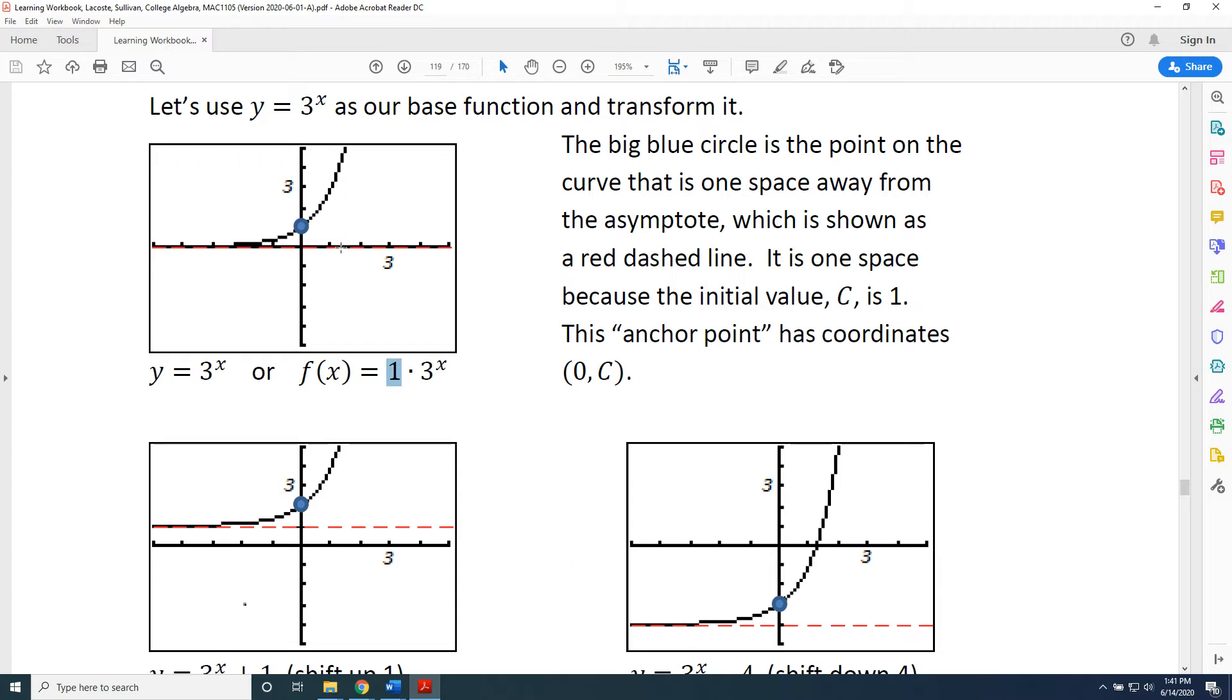The asymptote has changed place. Instead of being at the x-axis, it has now gone up one step. In fact, if we look carefully, we'll see that every point of the graph has moved up one step. This clearly represents a vertical shift up one step.